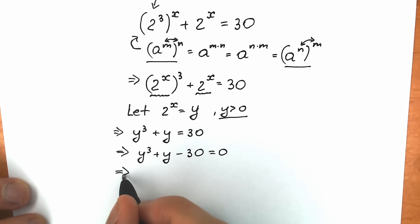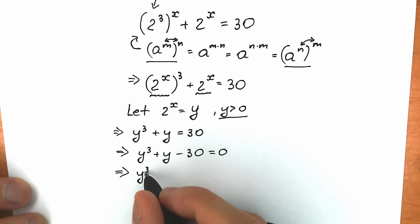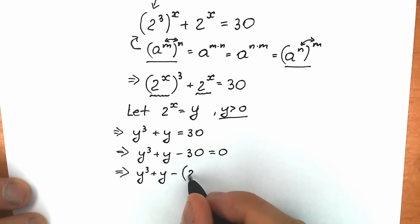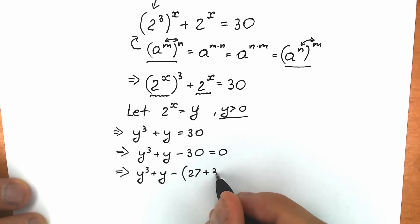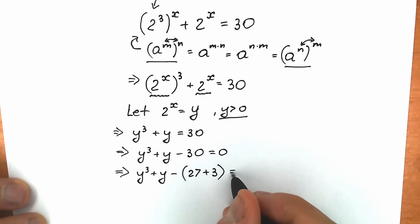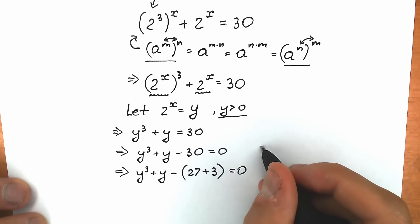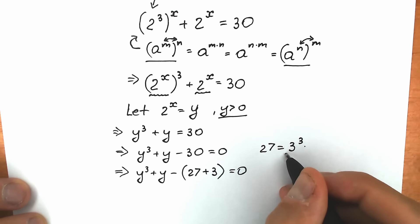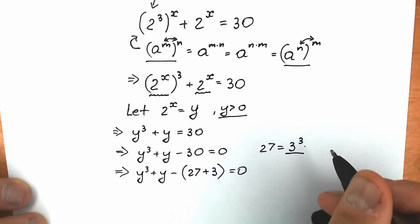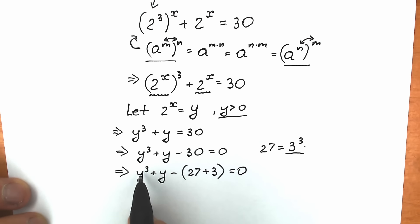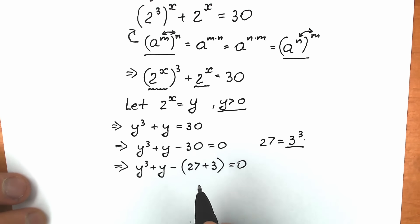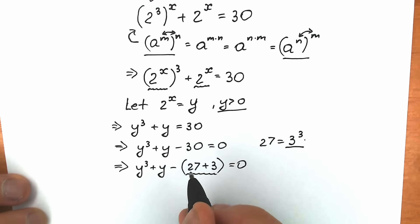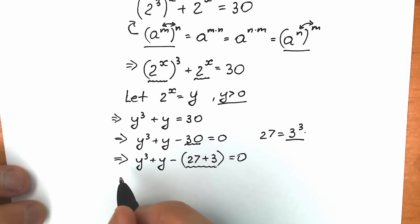So instead of 30, we have y cubed plus y equal to 27 plus 3. It changes nothing, but 27 equals 3 cubed. So we can group the cube terms. Let's open parentheses — this is absolutely the same thing. So now let's open parentheses: we have y cubed plus y minus 27 minus 3 equal to zero.